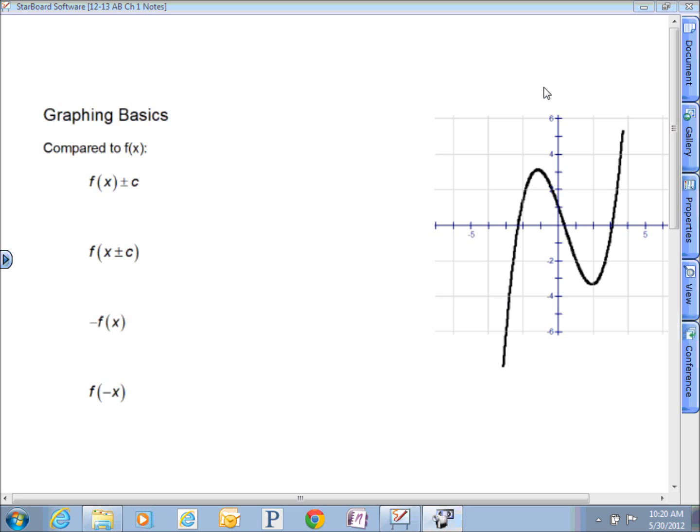Compared with my original function, so I'm going to call this black thing over here my f of x function. And so if that's my original function, what happens if I add or subtract a constant to it?